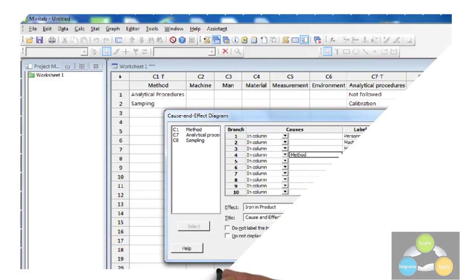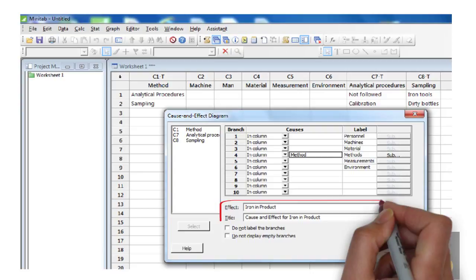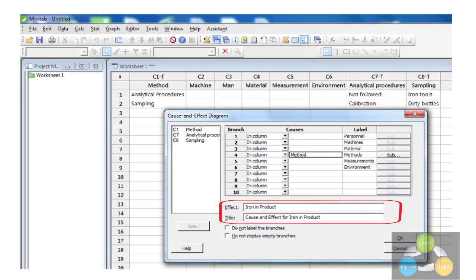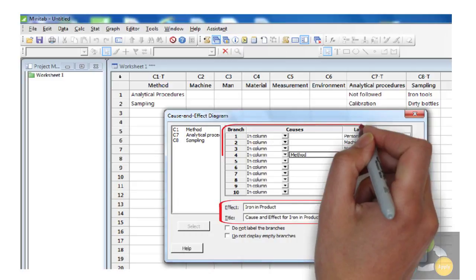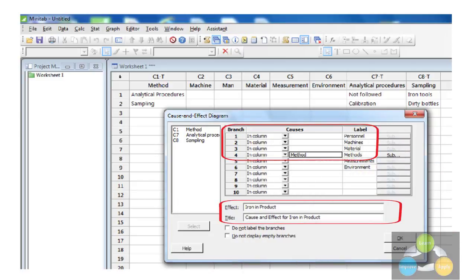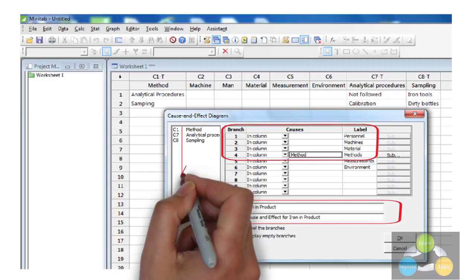Cause and effect diagram dialog box will be opened. Add the effect and title in the dialog box for which we are preparing the cause and effect diagram. In the row of methods, select branch as in column and the cause as method from the available option at the left side.